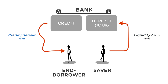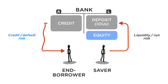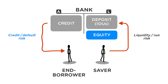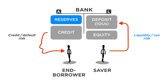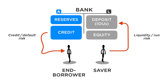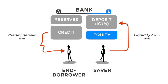In order to cover default risk, the bank should have an equity cushion to protect the depositors — savers in our example. In order to fend off liquidity run risk, some of these funds are invested in safe assets, for example reserves. The bank's balance sheet now has reserves on the asset side in addition to credit. On the liability side, it has the equity of the bank in addition to savers' deposits — IOUs against the bank.